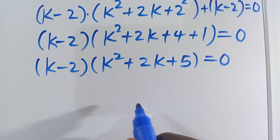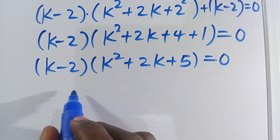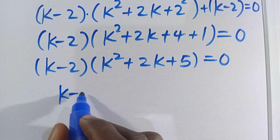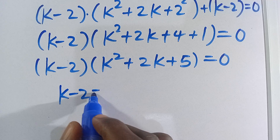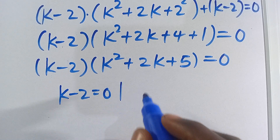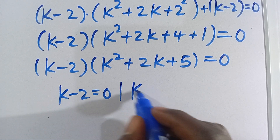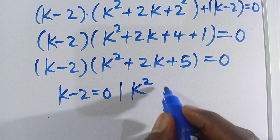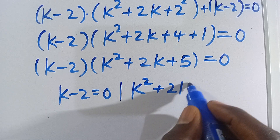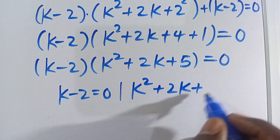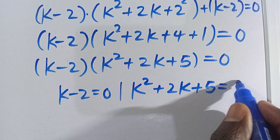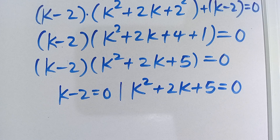So we have k minus 2 multiplied by k² plus 2k plus 5 equals 0. For this expression to equal zero, either k minus 2 equals 0, or k² plus 2k plus 5 equals 0.